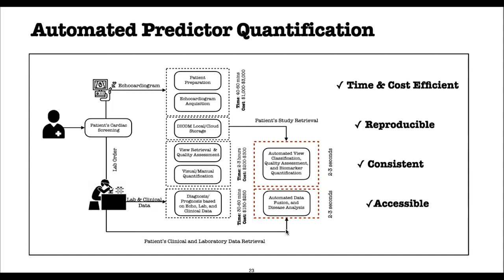This entire automation process saves time and decreases cost. It's also consistent and reproducible, and it can increase accessibility to healthcare services. Basically, this AI technology can be written as software, installed on a handheld device or smartphone, and used in low-income settings — greatly enhancing accessibility. In the next slide, I will explain how signal processing and machine learning algorithms extract and process non-imaging and imaging predictors.